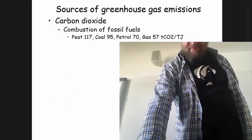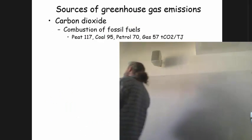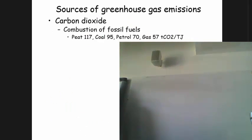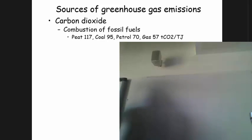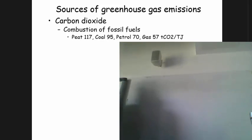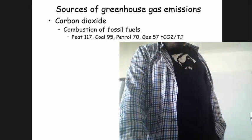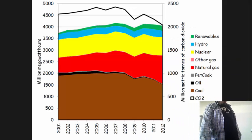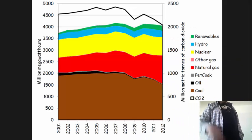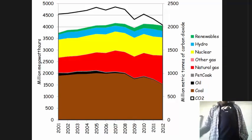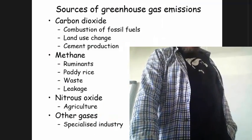The gain is straightforward. Coal averages about 95 tonnes of CO2 per terajoule of electricity, versus gas at below 60. That's more than a third reduction if you make this switch. So there you immediately have an option for reducing greenhouse gas emissions.